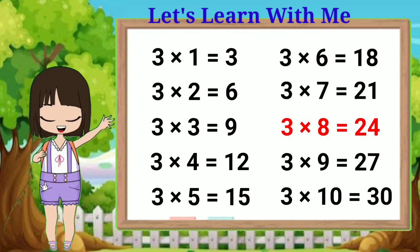Three eights are twenty-four, three nines are twenty-seven, three tens are thirty.